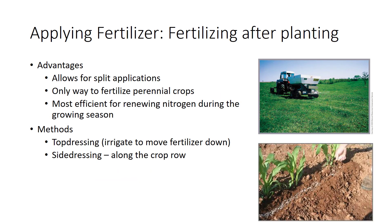Fertilizing after planting allows for split applications and is the only way to fertilize perennial crops in the years after planting—crops such as turf, orchards, or forages. Most post-plant fertilization focuses on renewing nitrogen during the growing season, which is the most efficient time to apply nitrogen to rapidly growing crops. Top dressing is similar to broadcasting except that fertilizer is spread over a growing crop and is not mixed into the soil. Either dry or fluid fertilizers can be used. This method is used to feed grains, pasture, and lawns.